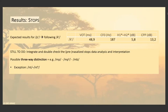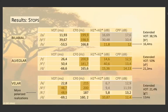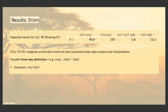I still need to integrate and double-check the pre-nasalized stop analysis and interpretation. I can see that there is a possible three-way distinction, with the only exception of the alveolar pre-nasalized stops. I think that there could be a three-way contrast, but I still need to further dive into the stops with non-aspiration to confirm.